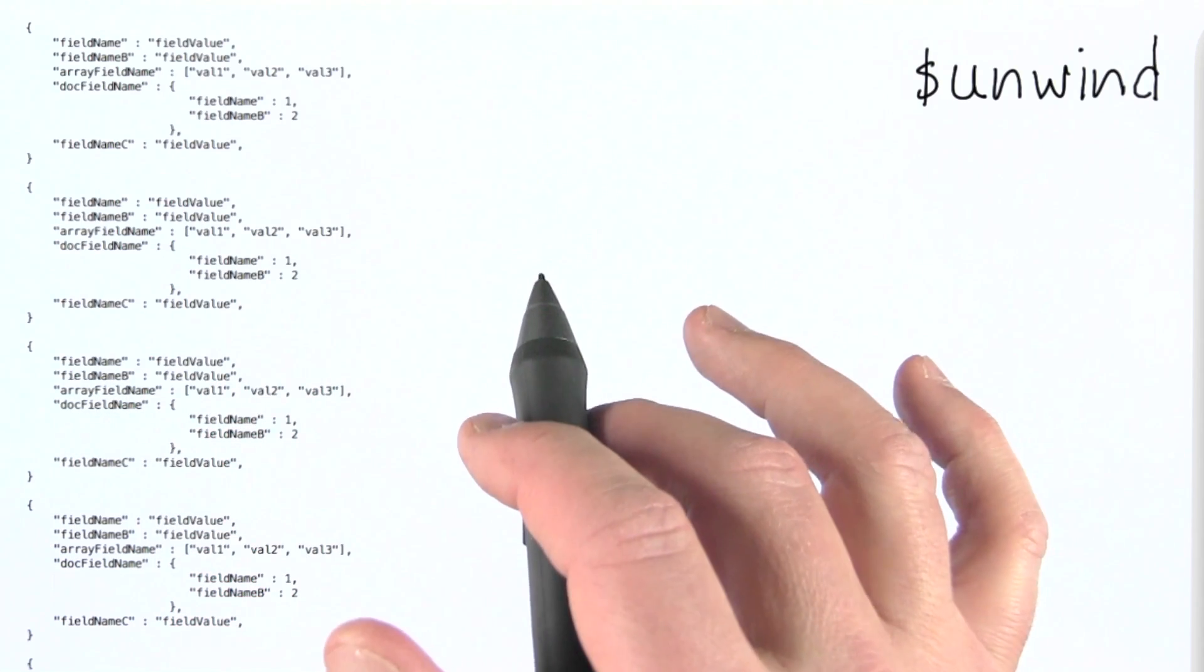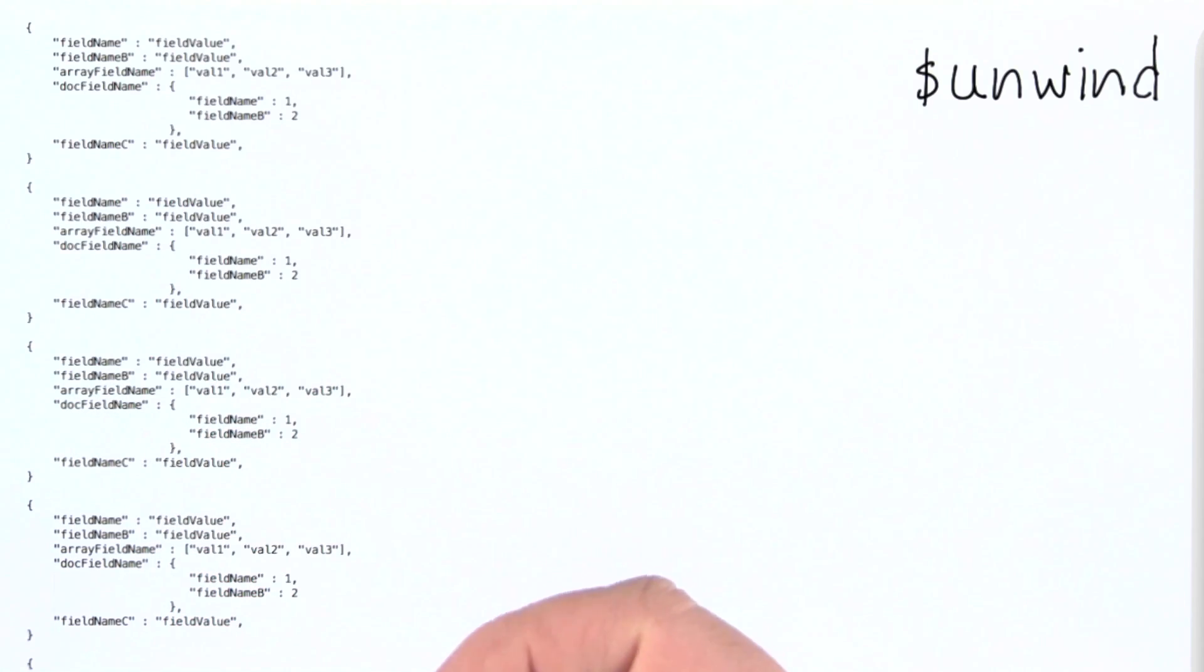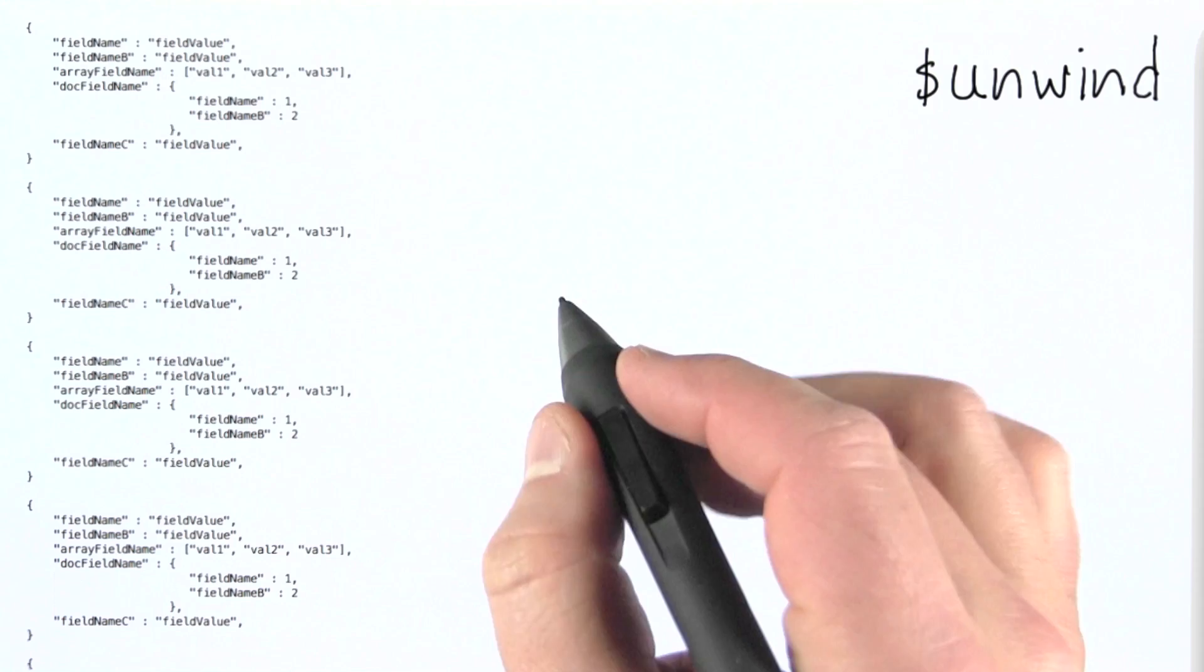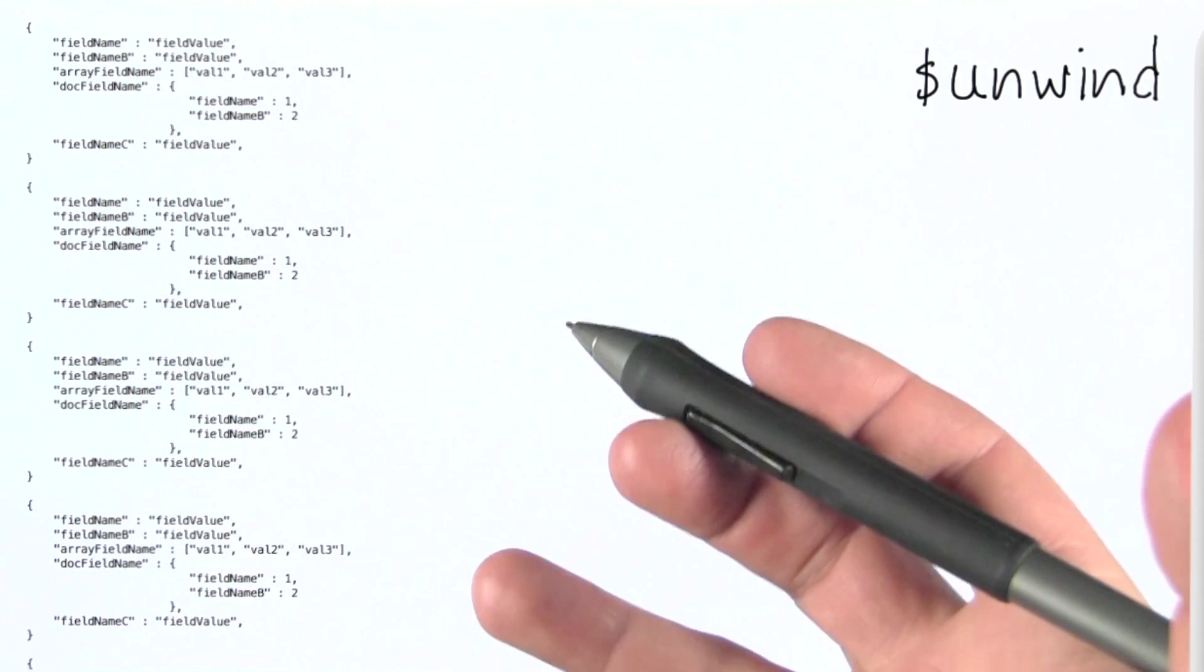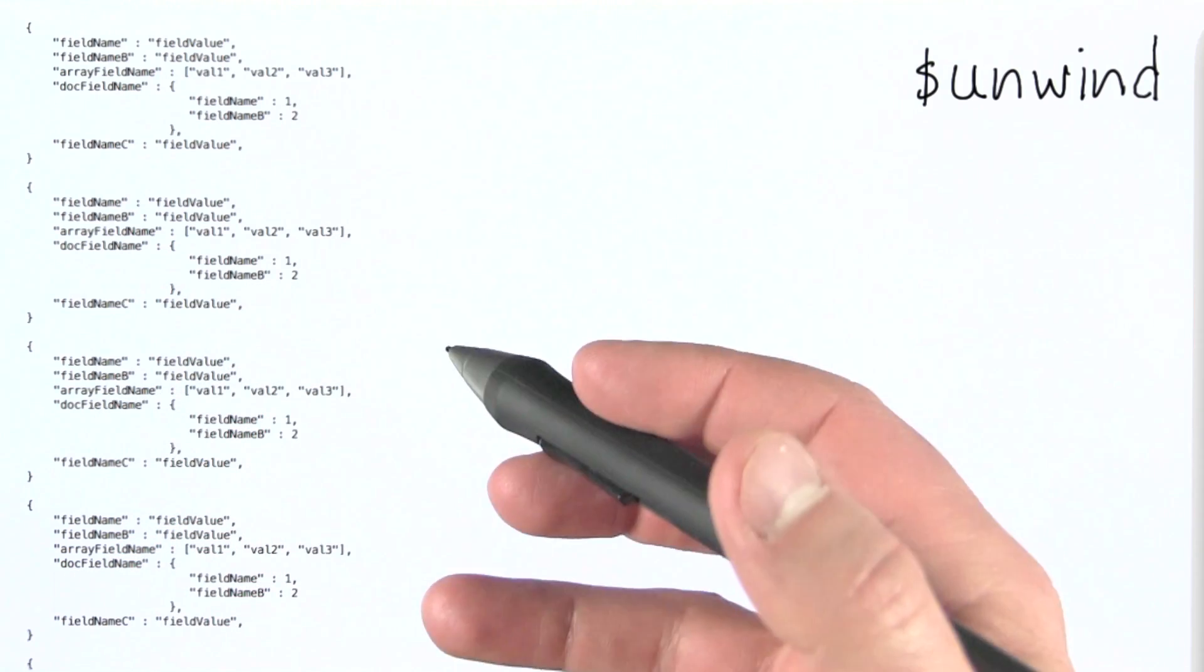So the last operator that I want to introduce you to is unwind. Unwind is really cool. So you know that we can have fields that have arrays as their values in MongoDB.